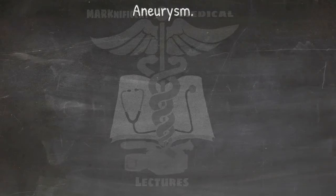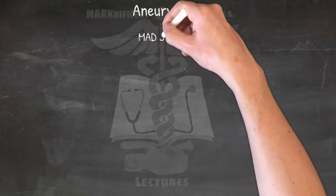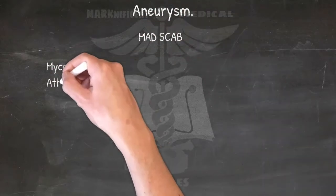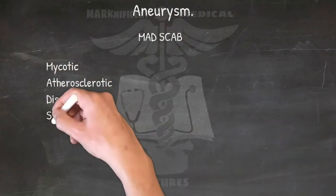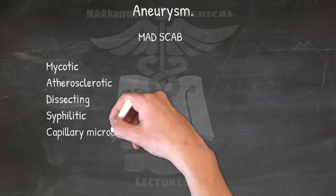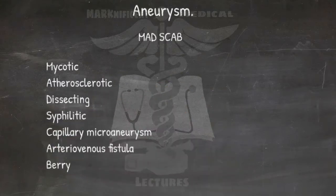Aneurysm: this is an abnormal bulge or ballooning in the wall of a blood vessel. Its types — MAD SCAB: Mycotic, Atherosclerotic, Dissecting, Syphilitic, Capillary microaneurysm, Arteriovenous fistula, and Berry.